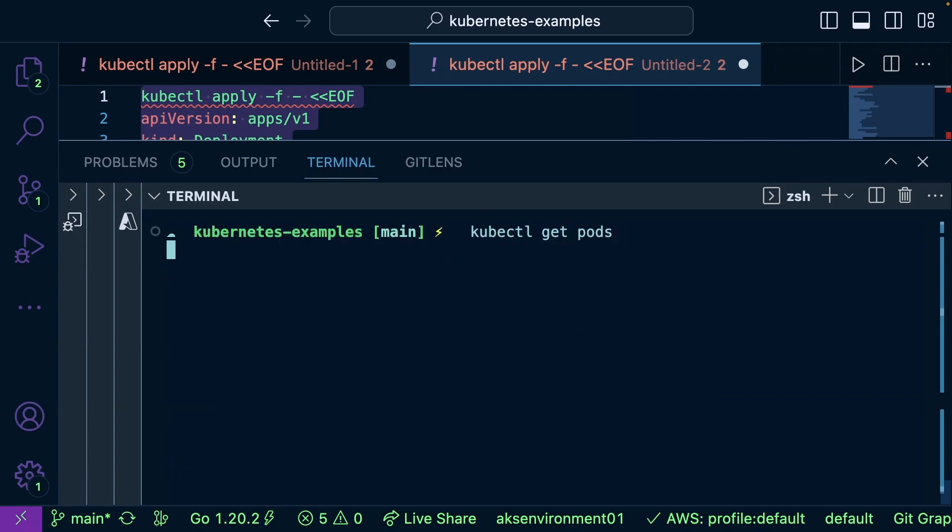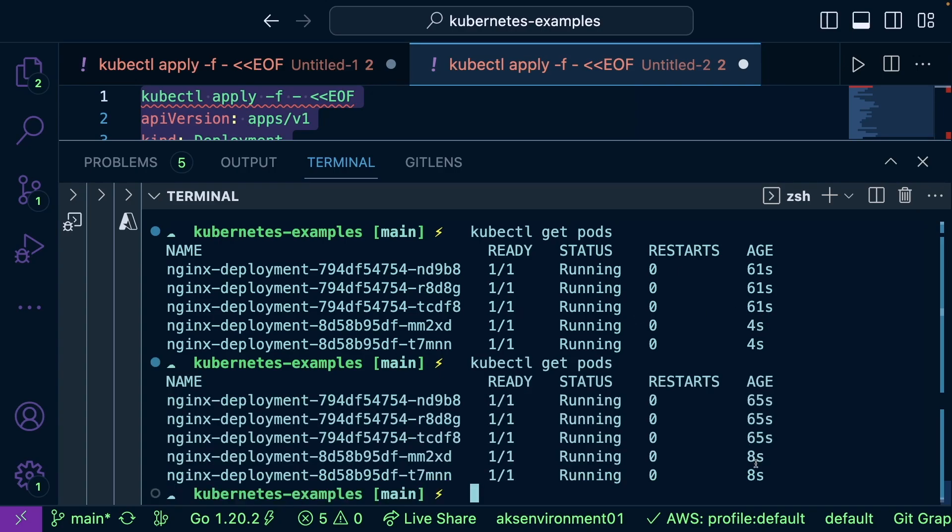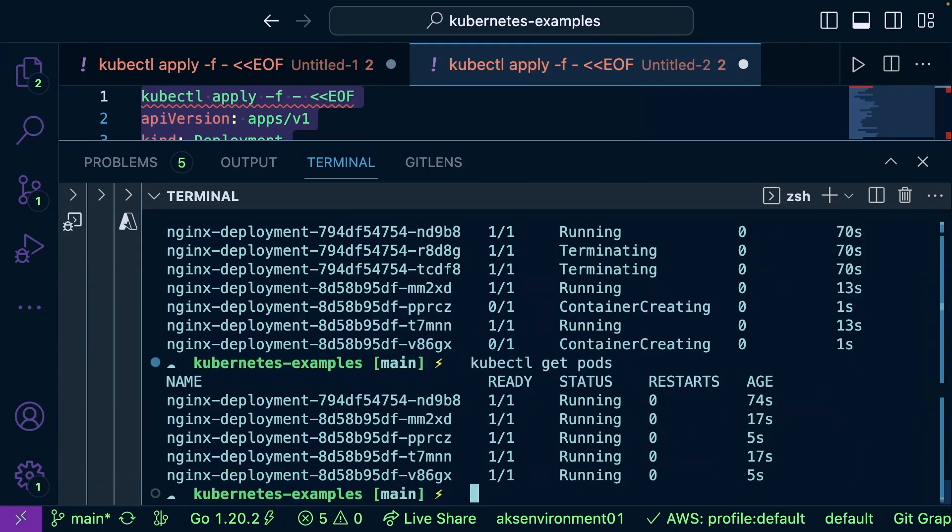Now, if I run kubectl get pods, notice how there are five. You can see two were just created—we can see the old ones and the new ones.